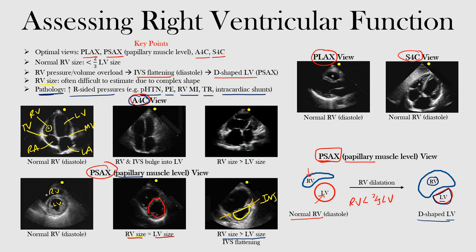In the middle image of the apical four chamber view, this is your right ventricle. Notice that now you have right ventricular and interventricular bulging into the left ventricle. The septum between them, instead of going straight, is now curved — the pressure from the right side is pushing over and causing that bulging into the left ventricle. In the third image, the right ventricular size is greater than the left ventricle and you have that interventricular septum pushing over to the left side.